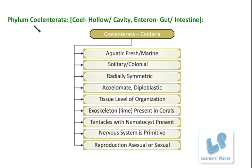This phylum Coelenterata is comprised of two terms: 'coelo' and 'enteron'. Coelo means hollow or cavity, and enteron means gut or intestine. So these organisms are showing some type of cavity in the intestinal region, and therefore they belong to this particular group — Coelenterata. The name comes from this particular meaning of the word.